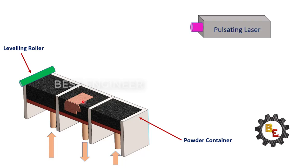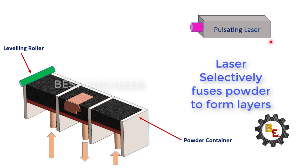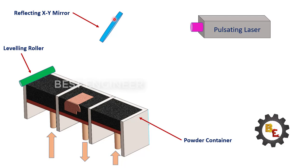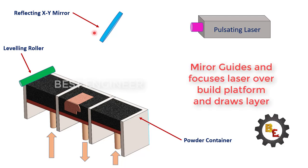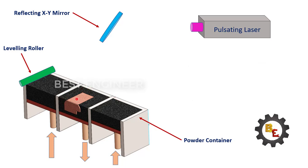Pulsating laser: This laser gun will receive the signal from the CAD file and pulsate the laser. Reflecting XY mirror: This reflecting XY mirror will adjust itself and focus the laser over the building platform and draw the layer. This process is repeated until the object is completely built.